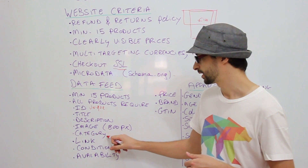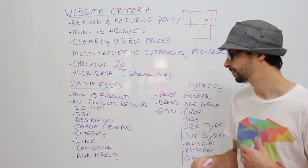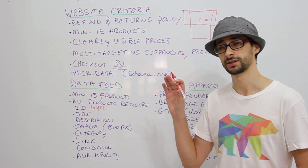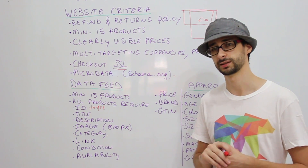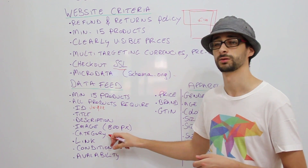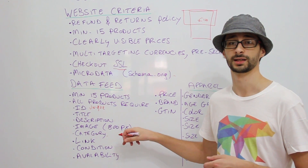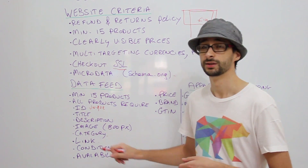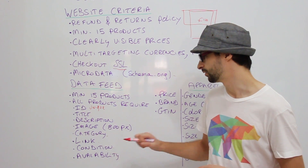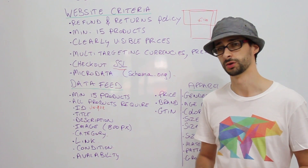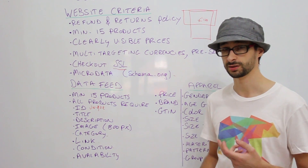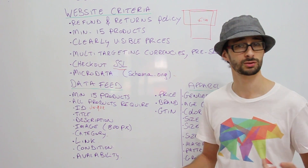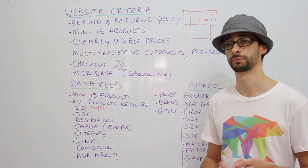Then we have the category, which is basically how Google categorizes your product. There's a huge list you can look at — the link is below in the description — and you need to find the category your product belongs to. Then obviously you need the link to your webpage. The condition can be new, used, or refurbished. You also need the availability, which can be in stock, out of stock, or pre-order.